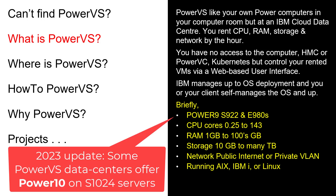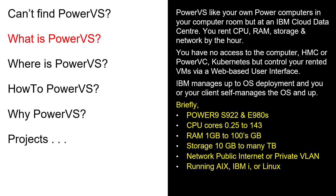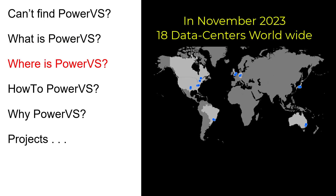In the IBM computer room, you'll have access to S922 or E980 for small and large machines. Your virtual machine can go from a quarter of a CPU up to 143 cores. Memory can go down to a gigabyte - though I prefer to start with four gigabytes - and up to hundreds of gigabytes. On storage, you can go down to 10 gigabytes, up to many terabytes. On the network, you can put it on the public internet for an internet-facing service, or set it up on a private LAN joined to your computer room. On the power computers, we run AIX, IBM i, or Linux.